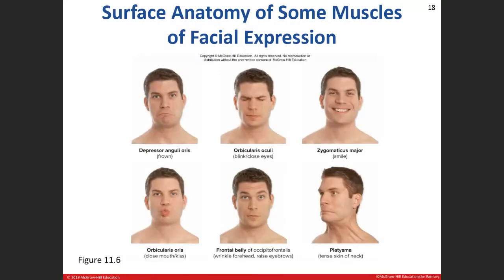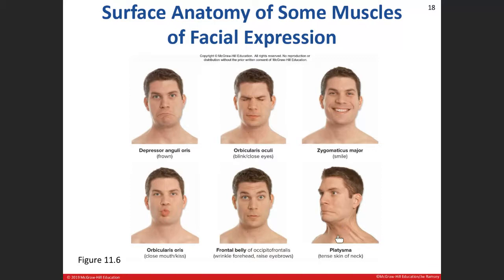Here you can see various facial expressions: depressor anguli oris pulling the lips down; orbicularis oculi closing the eyes; zygomaticus major and minor elevating the corners of the mouth into a smile; orbicularis oris puckering the lips; and the frontalis contracting the forehead. There's also platysma — the most superficial muscle in the front of your neck. When you dissect the skin back, platysma is the muscle immediately beneath, and it can expand the web of the neck.